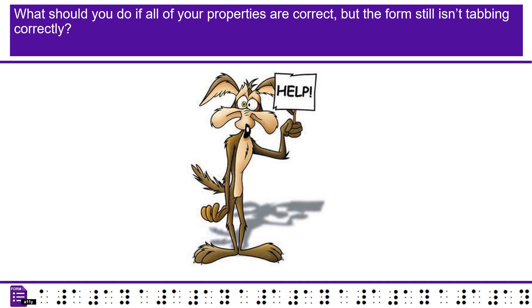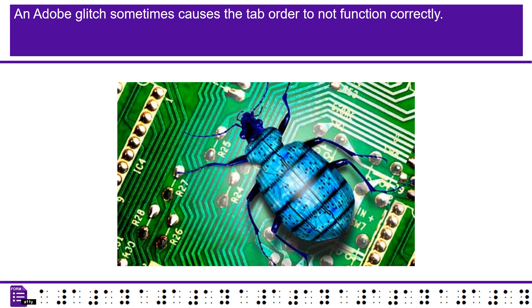What should you do if all of your properties are correct, but the form still isn't tabbing correctly? An Adobe glitch sometimes causes the tab order to not function correctly.